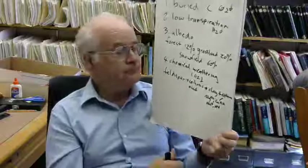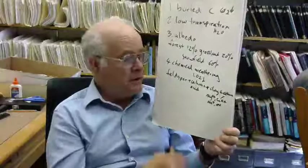So these are four ways in which we can explain global cooling by the increase of grasslands. Now, there are other explanations for the cooling that we see in the oxygen isotope record.